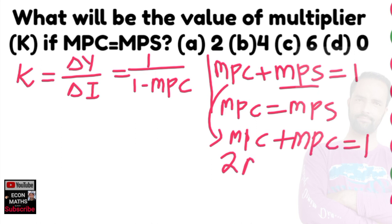This is twice MPC is equal to 1, which gives us MPC, marginal propensity to consume, is equal to 1 upon 2, which is equal to 0.5. So our MPC came out to be 0.5.